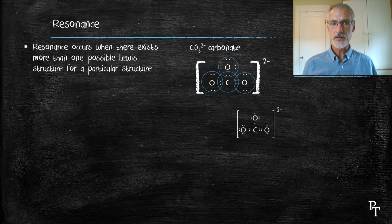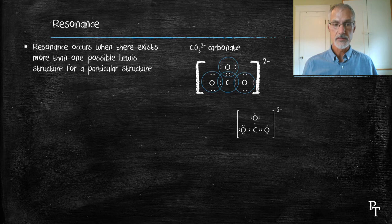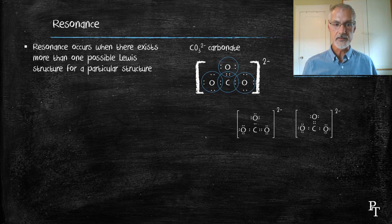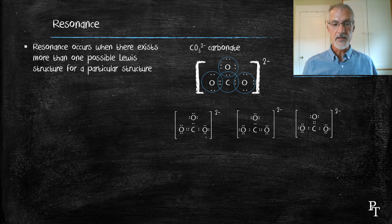But that's not the only way I could have solved the problem. It also would have been possible to move a pair of electrons from the top oxygen down, and that would create this structure. And in a similar fashion, I could have taken the electrons from the left oxygen and moved them in to create this structure. In fact, carbonate does all three. They call this phenomenon a resonance.